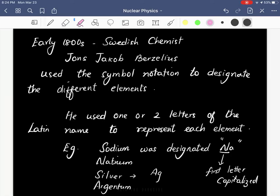sodium is designated as Na, which comes from the Latin name natrium, and silver is designated as Ag, which comes from the Latin name argentum. These are examples...